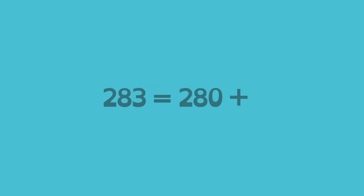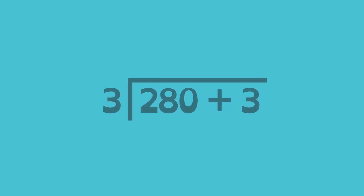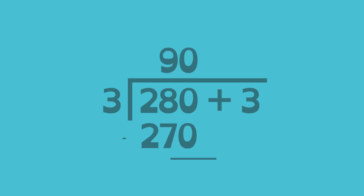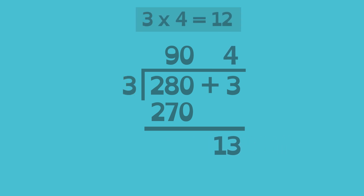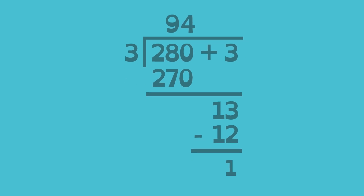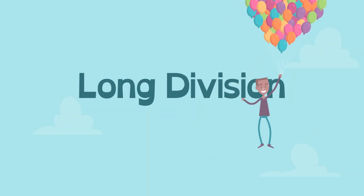Why does it help to think of a number in parts in long division? Since 283 is the same as 28 tens plus 3 ones, dividing 283 is the same as dividing 28 tens plus 3 ones. 3 times 90 is 270. Subtract, and the difference is 10. The 3 ones combine with the 10, making the remainder 13 ones. Since 3 times 4 is 12, 13 ones can be divided by 3 four times, making the answer 9 tens plus 4 ones, or 94, with a remainder of 1. Place value helps us use long division for large numbers.